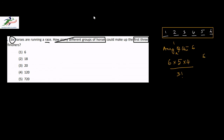So in other words, we can choose three horses to be in the first three spots in sixty ways divided by 3 factorial, which means this is equal to 20 ways.